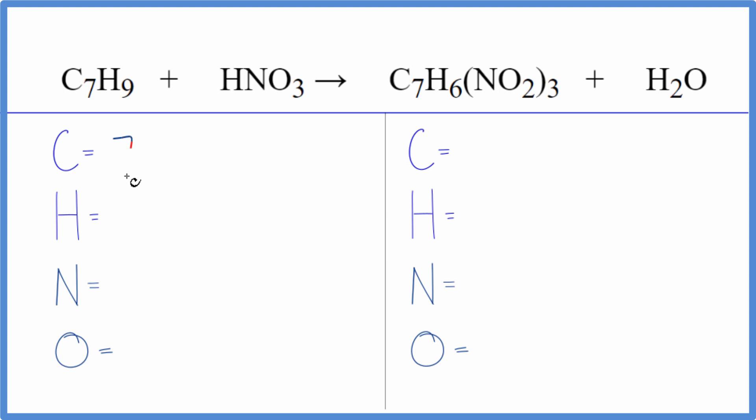So we have 7 carbons, 9 hydrogens, don't forget this hydrogen here. So we have 10 hydrogens, 1 nitrogen, and 3 oxygen atoms.